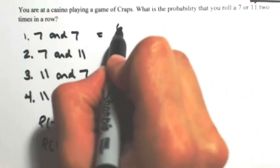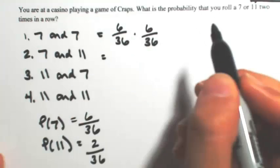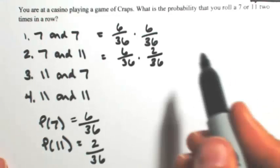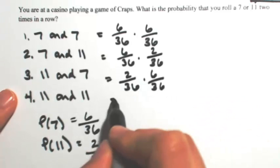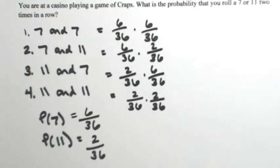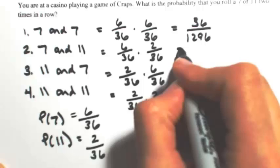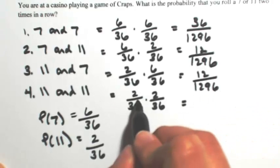If I want to get a 7 both times, that's 6/36 times 6/36. Each roll is independent. If I want to get 7 followed by 11, that's 6/36 times 2/36. If I want 11 first, that's 2/36, and then a 7 would be 6/36. If I want to get 11 both times, that's 2/36 times 2/36. Because you have a sequence of events, you multiply them together. So: 6 times 6 is 36; 36 times 36 is 1296. 6 times 2 is 12; 2 times 6 is also 12; and 2 times 2 is 4.